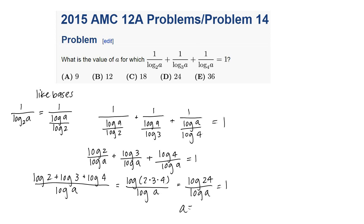So a equals 24, and that is our answer — C, 24. This was problem 14 off of AMC 12A from last year. There are 25 problems on every AMC. The next AMC is coming up on February 3rd, and I will post a few more videos about AMC problems before then. Best of luck!